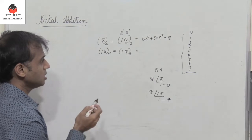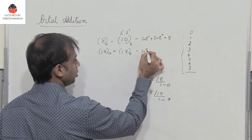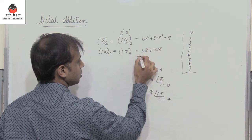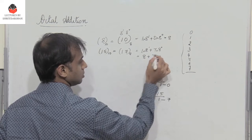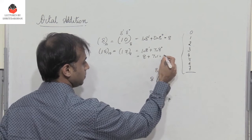How do I convert this back to decimal? It's going to be 1 into 8 power 1 plus 7 into 8 power 0. So this is 8 plus 7 into 1, which is 8 plus 7, giving me 15.